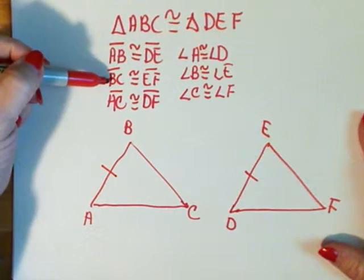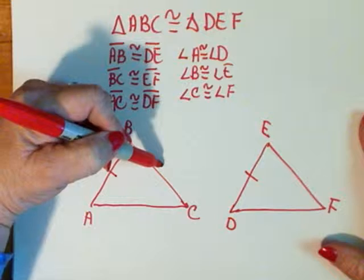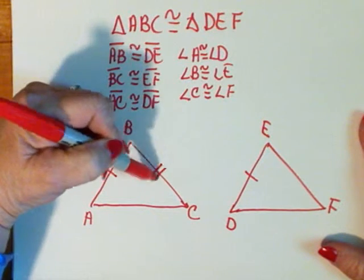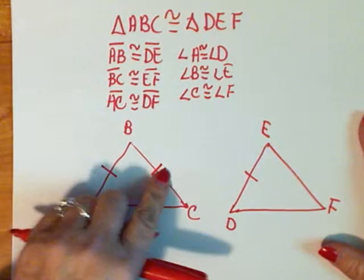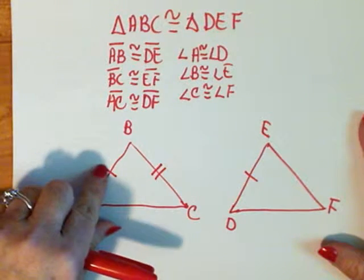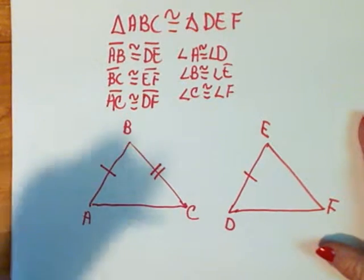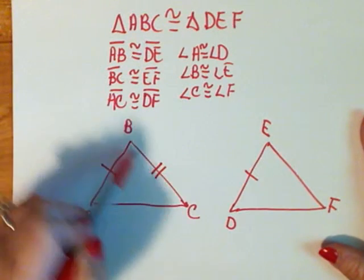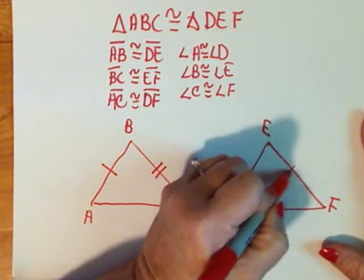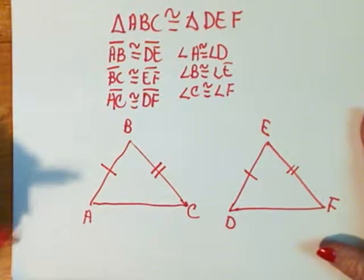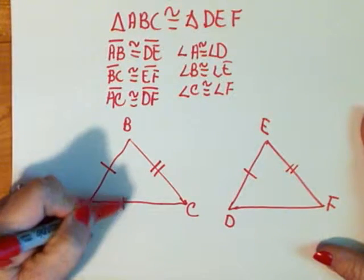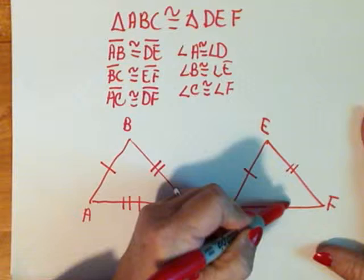BC is congruent to EF. Now these two sides aren't the same, so I mark them with different hash marks. They may look the same but they're not unless it tells us they are. Then BC is EF so we'll mark that with two. I also know that AC is congruent to DF, so we'll put three hash marks on both of those.